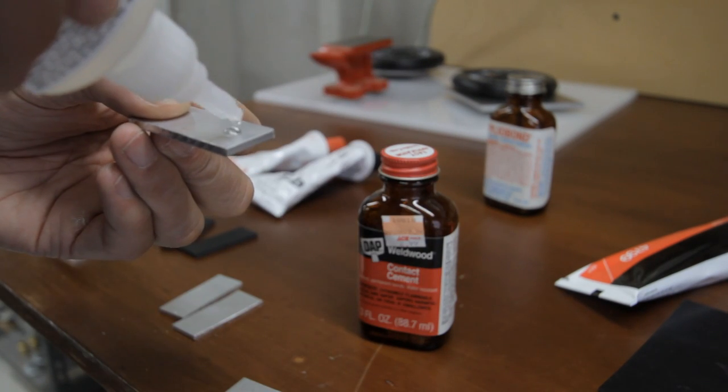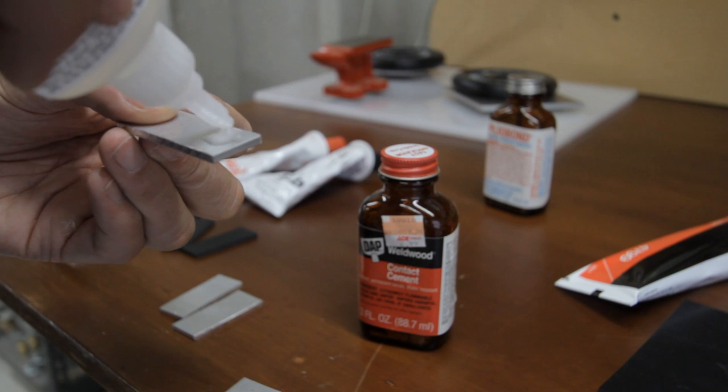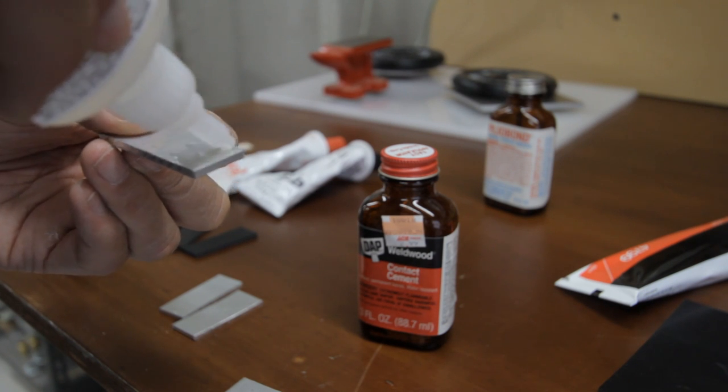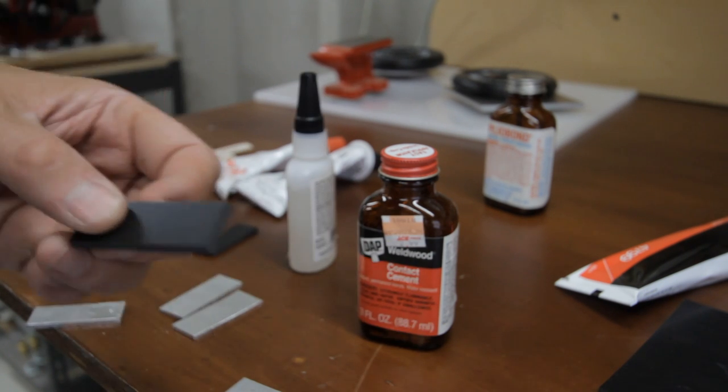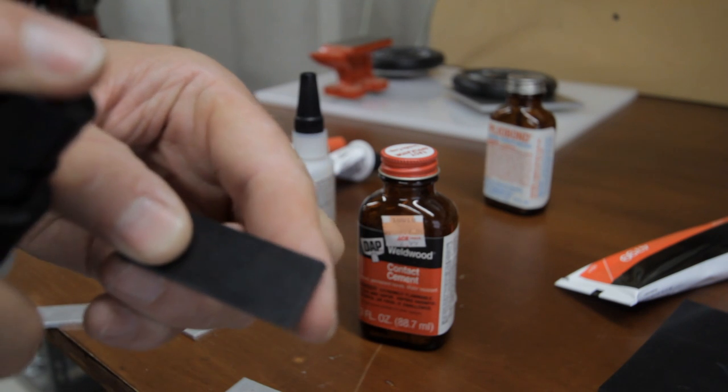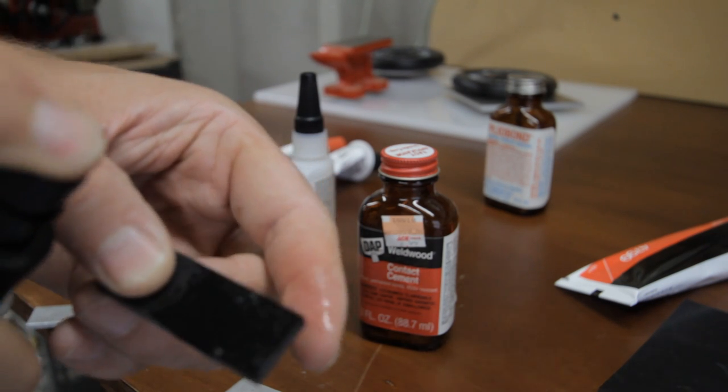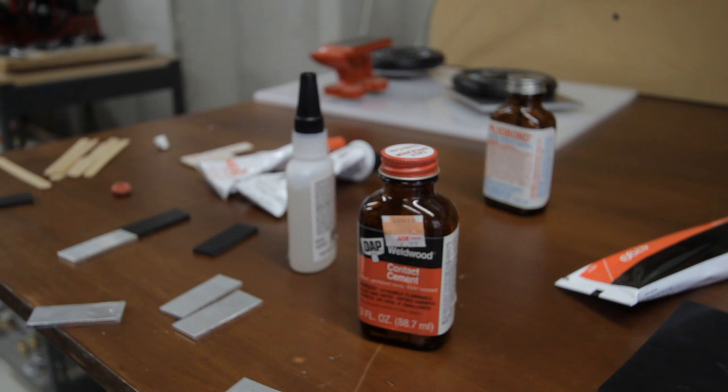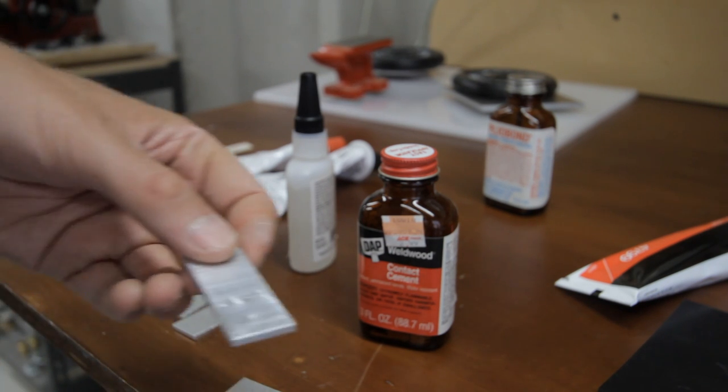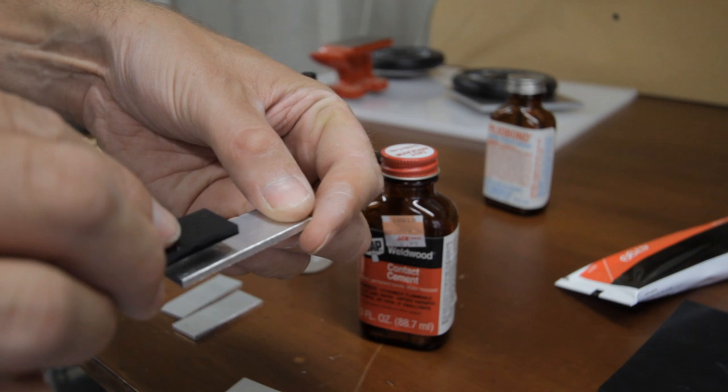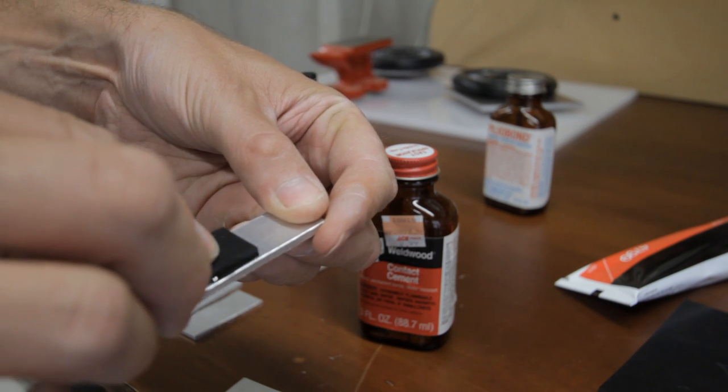Cyanoacrylate glue, or super glue, is well known for being very strong. This quality brand comes with a spray activator, which should be applied to the opposite piece. And of course, setup time is almost instant.